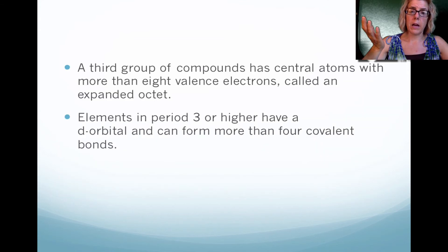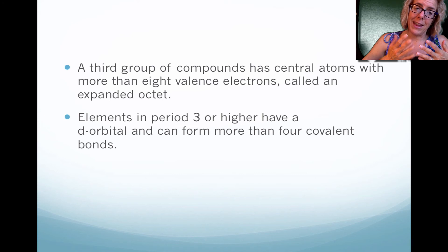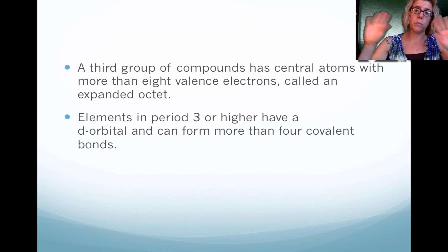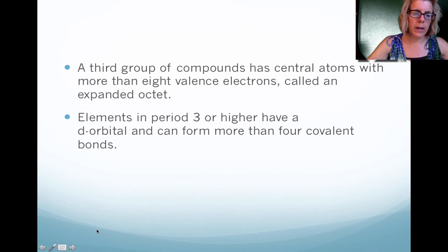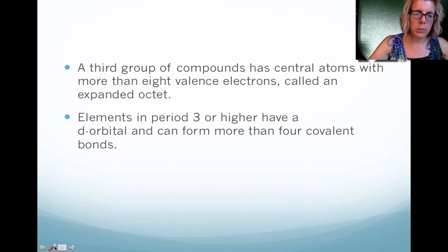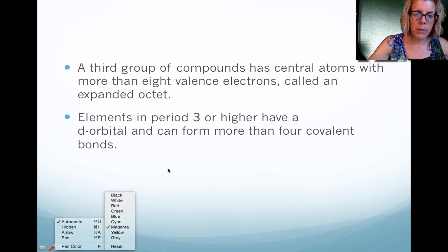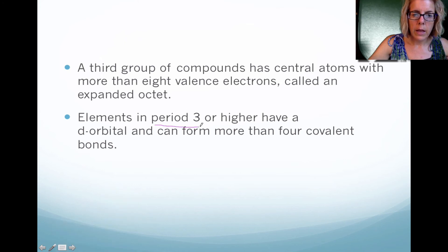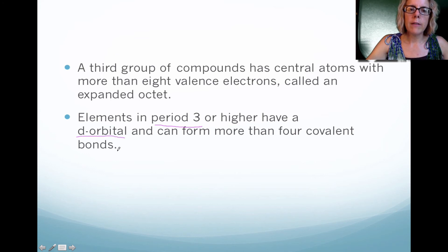There's another group of compounds that actually have more than eight electrons, and we call that an expanded octet. Please note that you have to have an element where it's in period three, so we're talking about the third row, and it needs to have access to d-orbital electrons. Having that d-orbital of electrons actually expands the amount of electrons that it's able to accept.